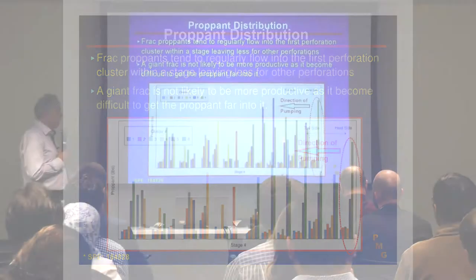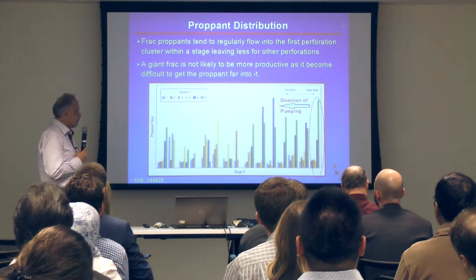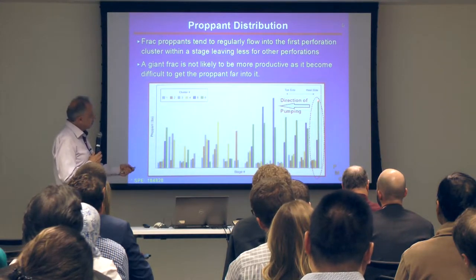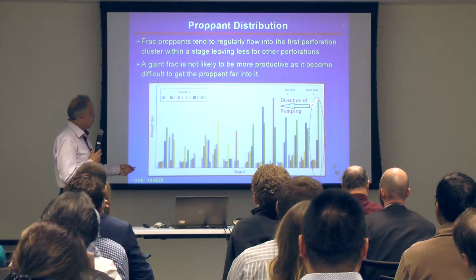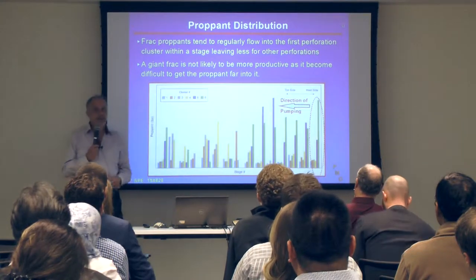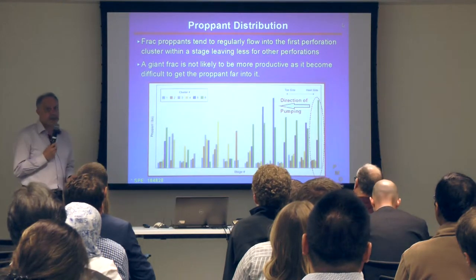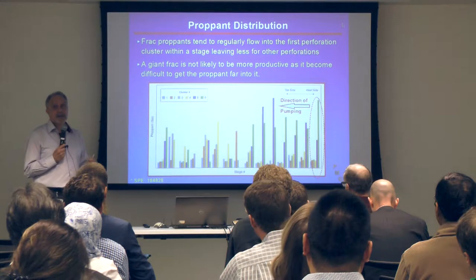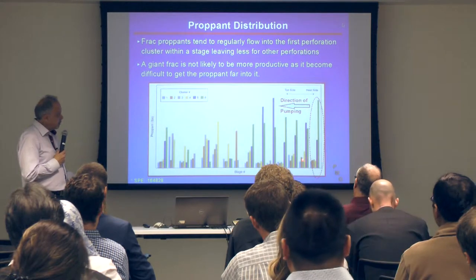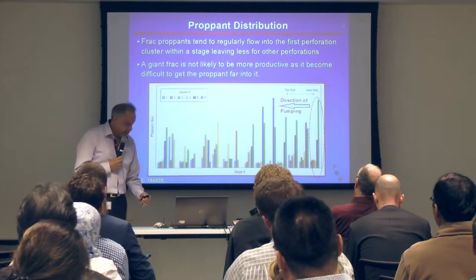In a cased hole completion with multiple clusters per stage, as you frack the well from heel to toe, the first cluster of perforations takes most of the fluid — look at the green bar compared to the other clusters. This creates uneven fracture geometry. To avoid this, some frack companies use diverters to divert fluids from the first cluster to benefit the other clusters within one stage.